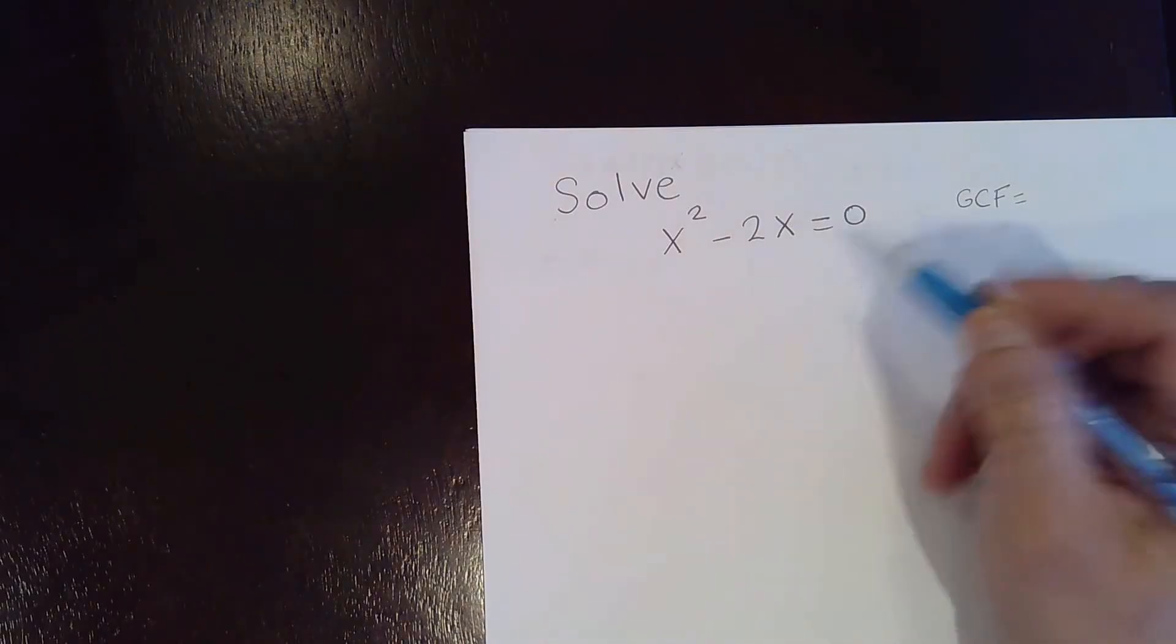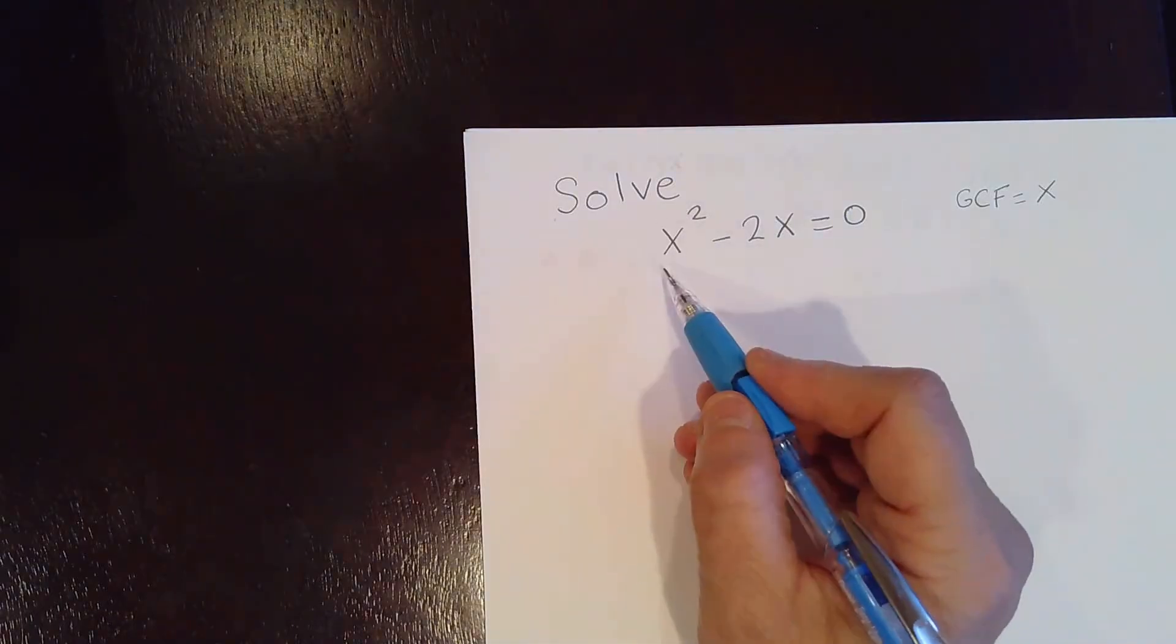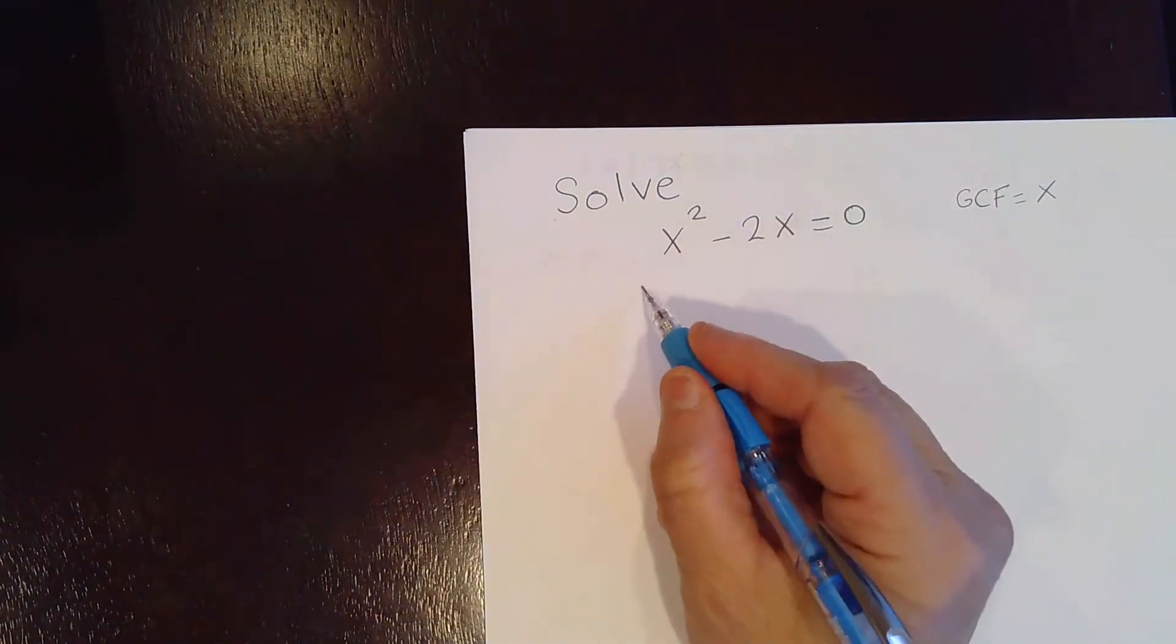The greatest common factor is x. If you notice, x is a factor in the first term and in the second term. So let's factor the GCF.